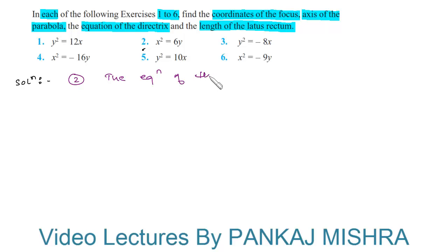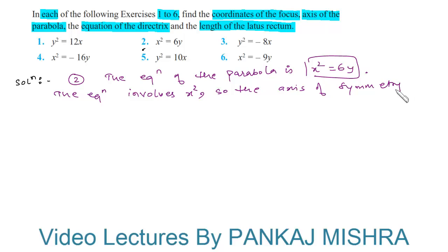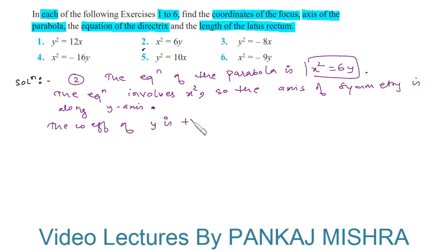In the second problem, the equation of the parabola is x² = 6y. Since the equation involves x², the axis of symmetry will be along the y-axis. Also, the coefficient of y is positive, so the parabola will open upwards.